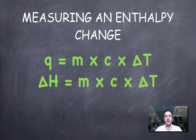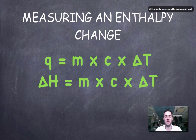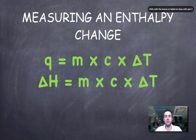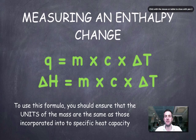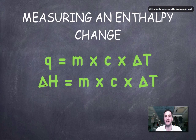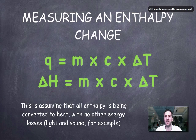To measure an enthalpy change from a temperature change, the formula printed on the data sheet is: q = m × c × ΔT. Here, Δ means 'change', T is temperature, c is the specific heat capacity, and m is the mass. Crucially, m is the mass of the substance being heated — not the mass of the substance doing the heating. The q calculated will be in joules.